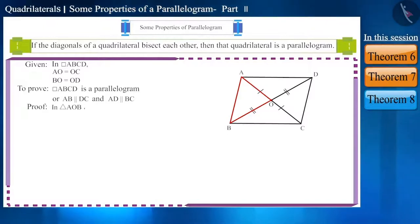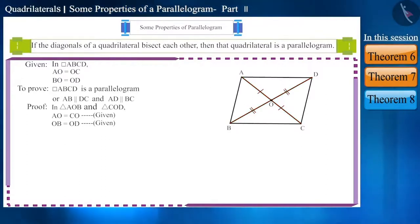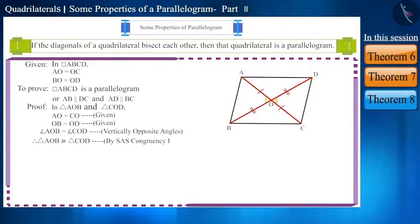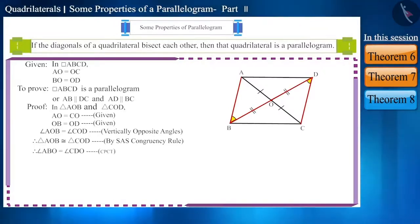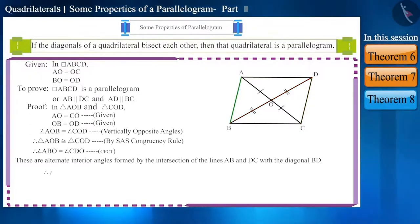In triangle AOB and triangle COD, side AO is equal to side CO, side OB is equal to side OD, and angle AOB is equal to angle COD because these are vertically opposite angles. Therefore, these two triangles are congruent by the SAS congruence rule. So, angle ABO is equal to angle CDO as corresponding angles of congruent triangles. These equal angles are alternate interior angles formed by the intersection of sides AB and DC with diagonal BD. Therefore, AB is parallel to DC.